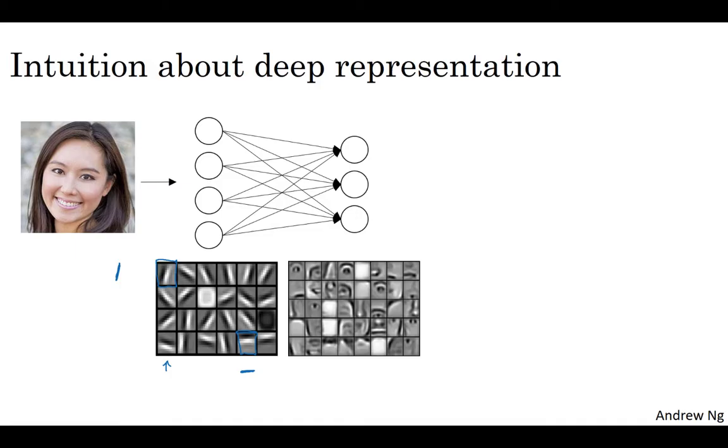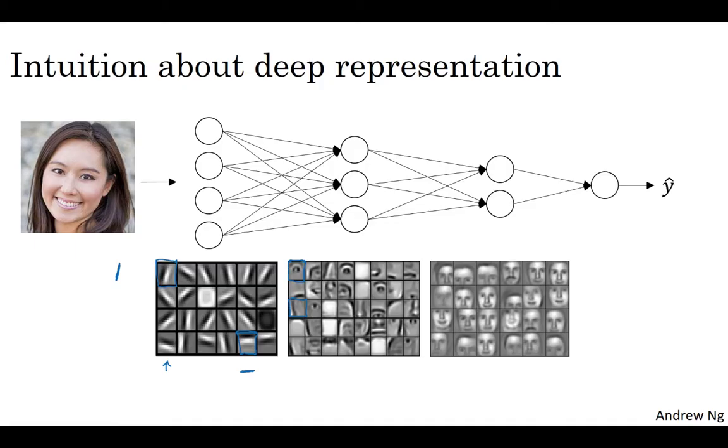So for example, you might have a little neuron trying to see if it's finding an eye or a different neuron trying to find that part of the nose. And so by putting together lots of edges, it can start to detect different parts of faces. And then finally, by putting together different parts of faces like an eye or a nose or an ear or a chin, it can then try to recognize or detect different types of faces.